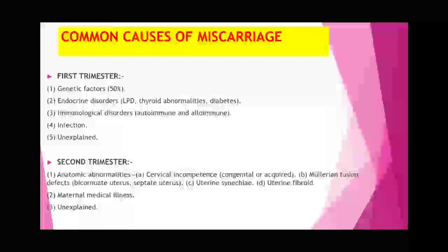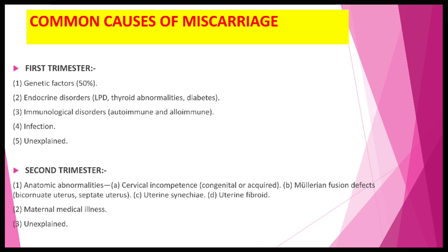The common causes by trimester: in the first trimester — 50 percent genetic, endocrine (LPD), diabetes, immunological disorders (autoimmune), infection, and unexplained. In the second trimester — anatomical abnormalities such as cervical incompetency (congenital or acquired), Mullerian fusion defects, bicornuate uterus, septate uterus, uterine synechiae, uterine fibroids, maternal medical illness, and unexplained (40–60 percent).